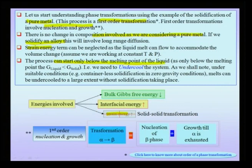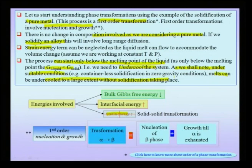This process can start only below the melting point, because only below the melting point is the free energy of the solid lower than that of the liquid. This automatically implies we have to undercool the system — take it below the bulk melting point. Under suitable conditions, melts can be undercooled to a large extent without solidification taking place. For instance, under zero gravity conditions without a container, it has been possible to undercool systems more than 100 degrees Celsius.